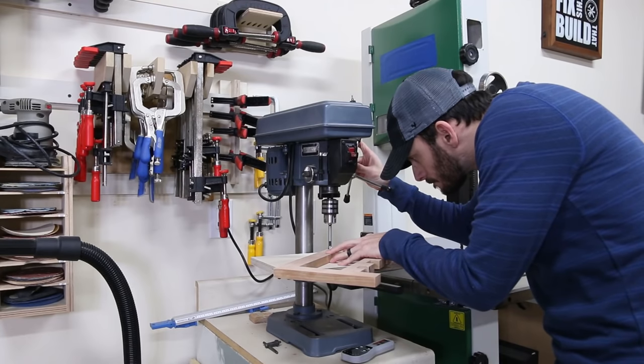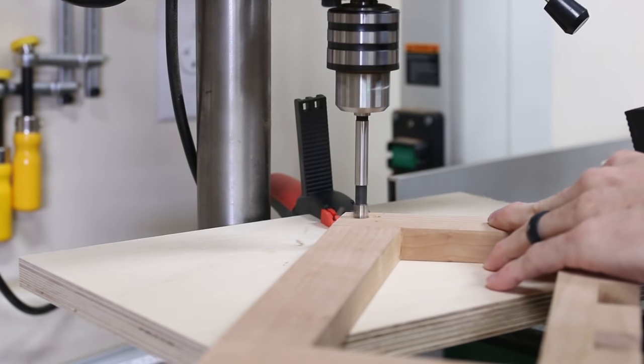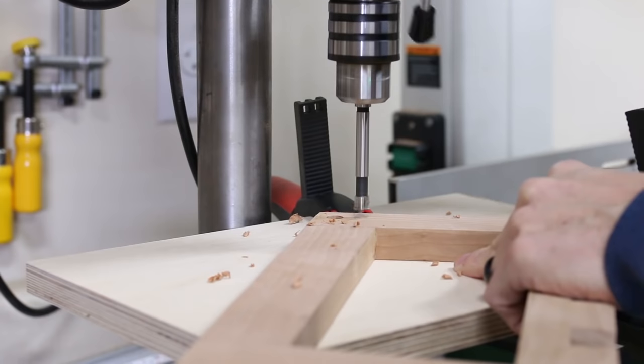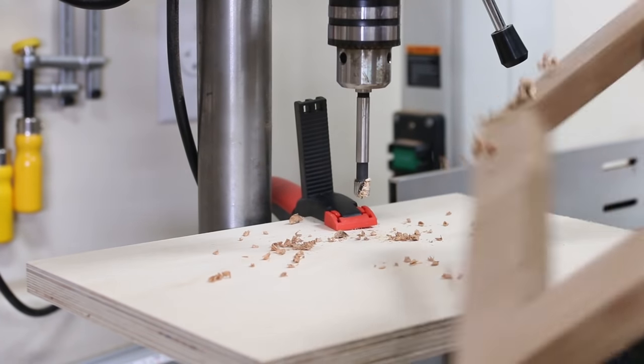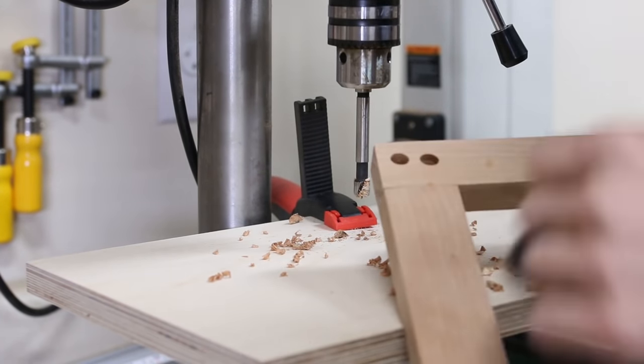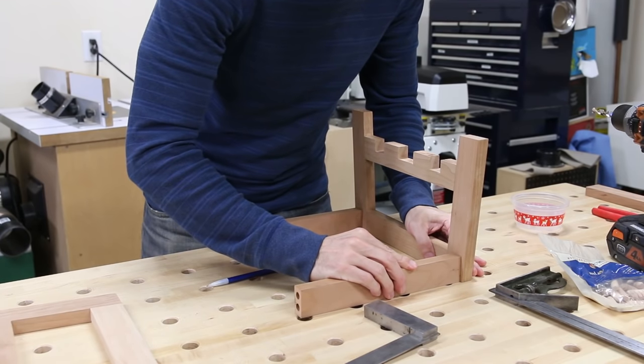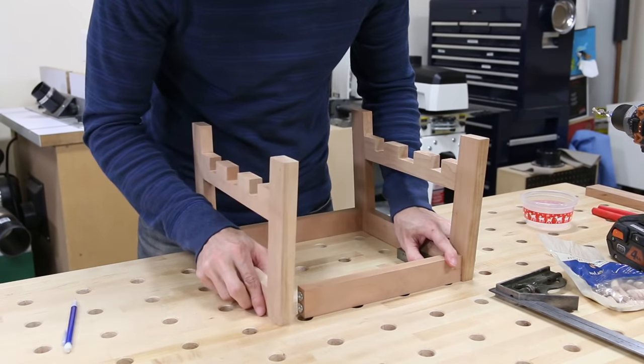I took the side assembly over to the drill press and I drilled the holes with a Forstner bit. You can do this with a hand drill too, just make sure your holes are straight and make sure you don't go through the wood. I did the same thing with the other apron then I dry fit the aprons with the dowels onto the side.